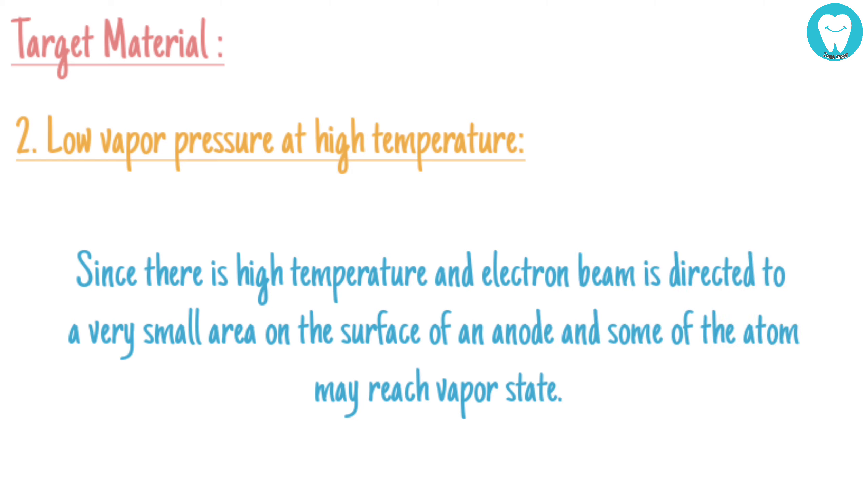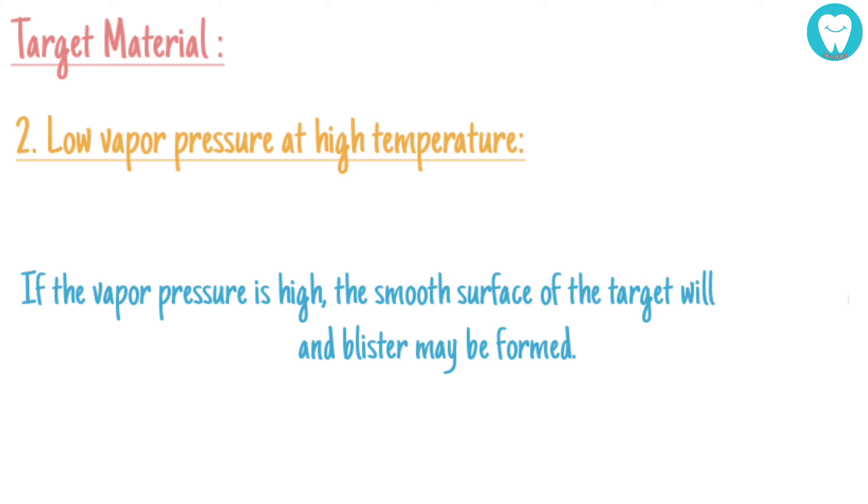Low vapor pressure at high temperature. Since there is high temperature, an electron beam is directed to a very small area on the surface of an anode, and some of the atoms may reach vapor state. If the vapor pressure is high, the smooth surface of the target will be disturbed and blisters may be formed.